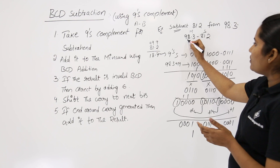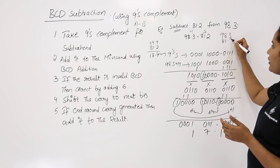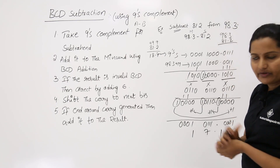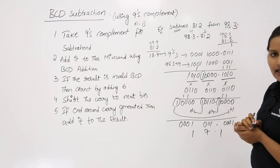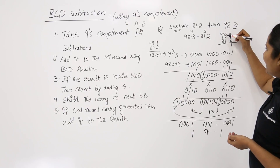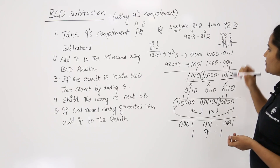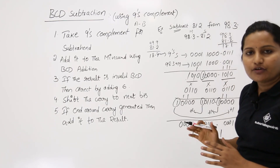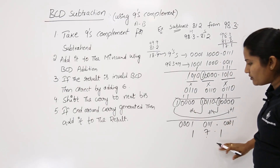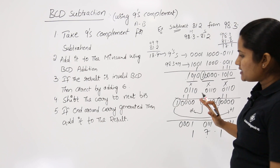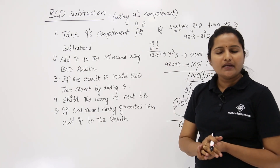Let us cross-check this result. We performed 98.3 minus 81.2 using BCD subtraction. 3 minus 2 gives 1, 8 minus 1 gives 7, and 9 minus 8 gives 1, so the expected answer is 17.1. The same result was obtained from the BCD 9's complement subtraction process, confirming it is correct. This is how we perform BCD subtraction using the 9's complement process.